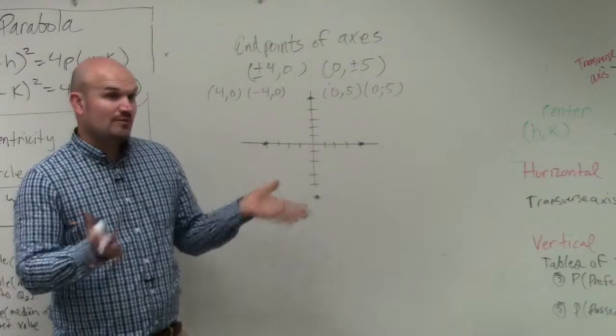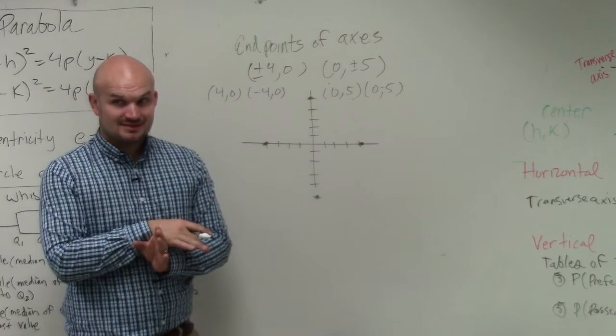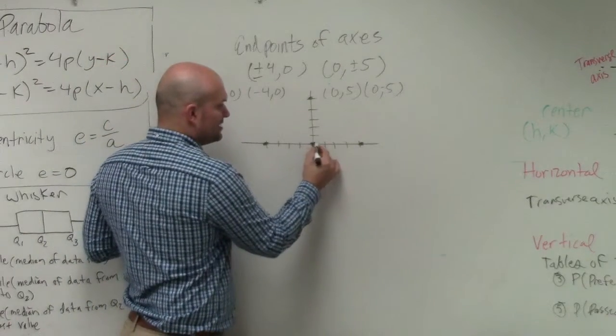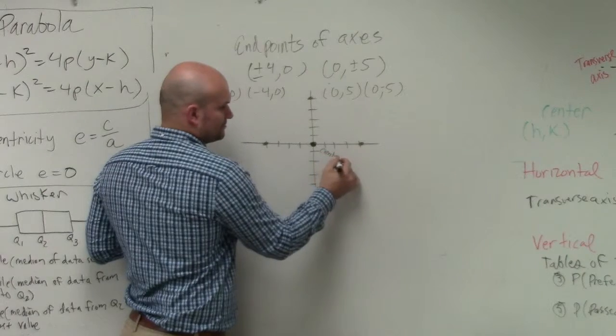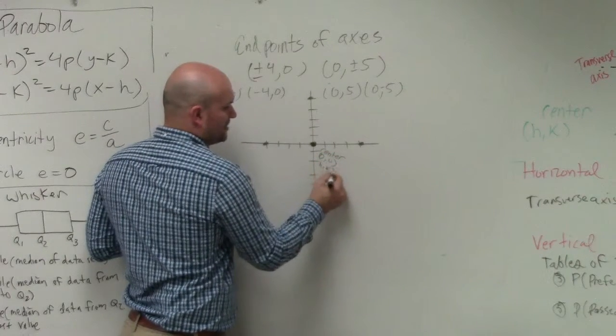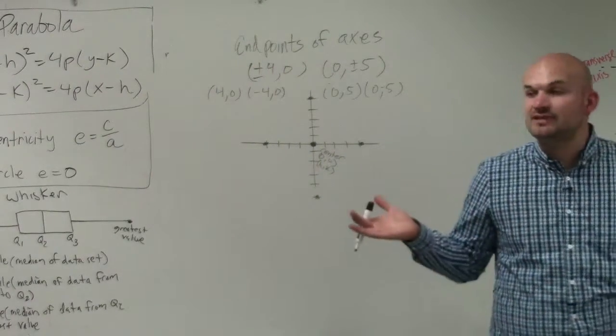Now, we know that where the two axes intersect is the center, right? Or you can obviously see that they intersect at the origin, which is 0 comma 0. Or in the formula, we represent those with the variables h and k. So guess what? We have h and k completed.